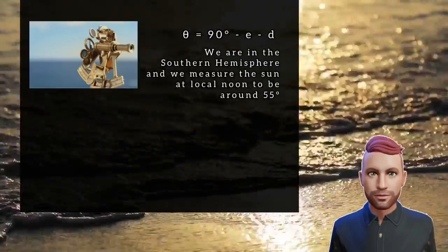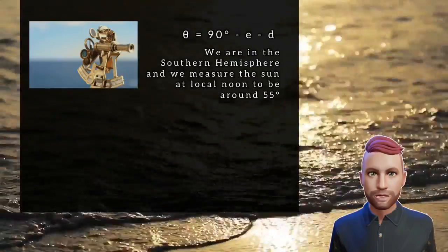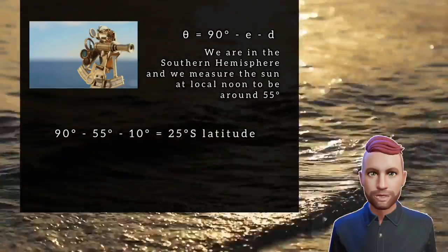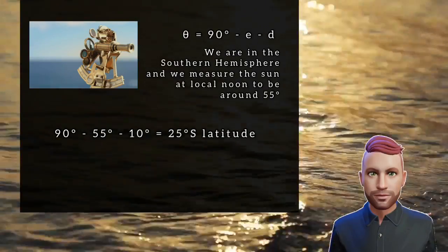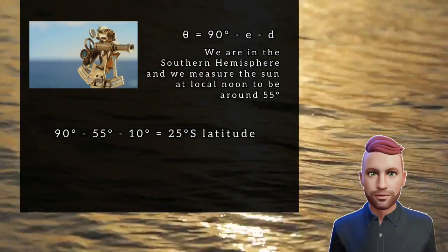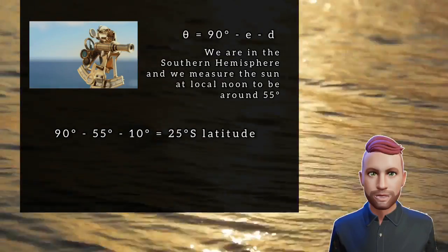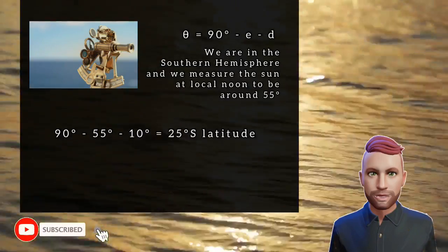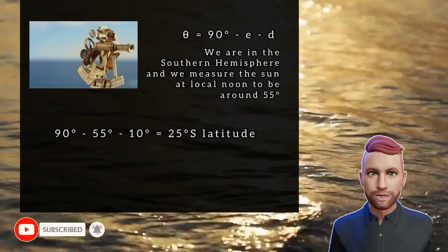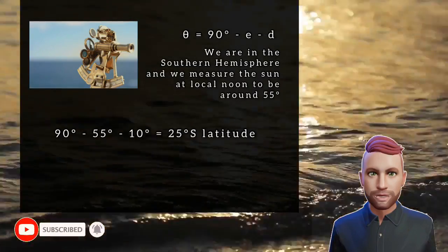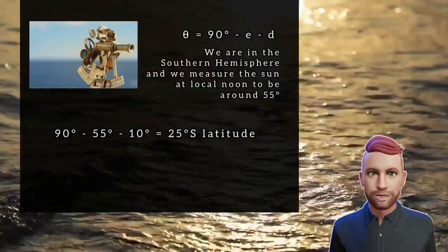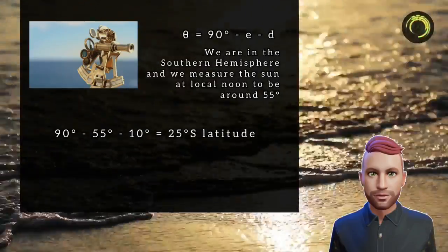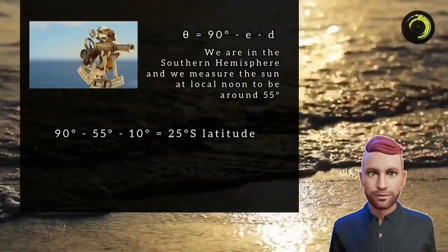I measured about 55 degrees. So let's use the equation. We have 90 degrees minus the 55 degree elevation that we have measured the Sun at, minus the 10 degrees declination for that time of year, which comes up to a 25 degree south latitude.